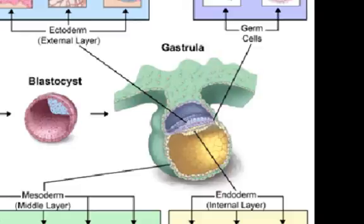Each of those 200 cell types will fall into one of the four primary categories of tissues in the body — as you remember, we've already studied: muscle tissue, nerve, connective tissue, and epithelial tissue.